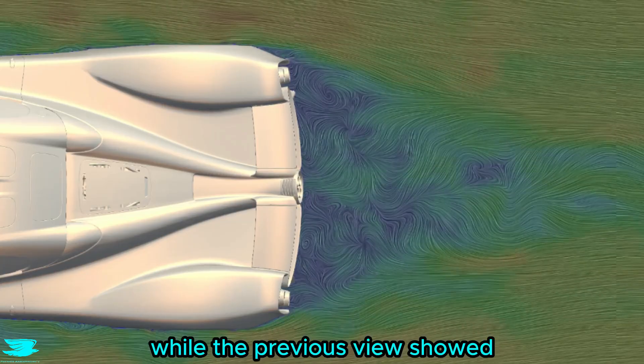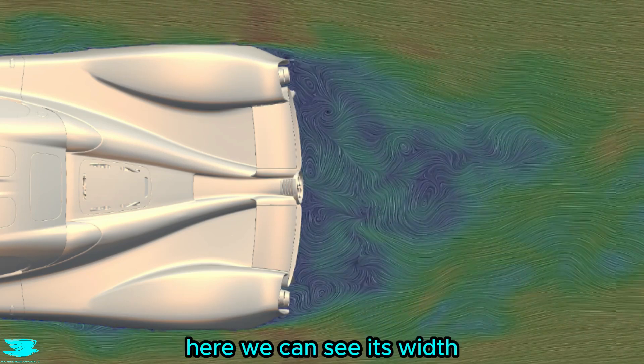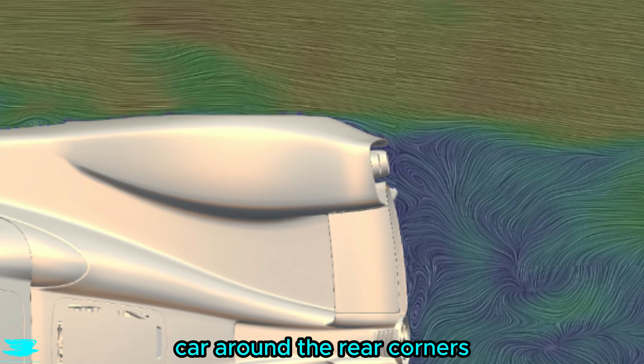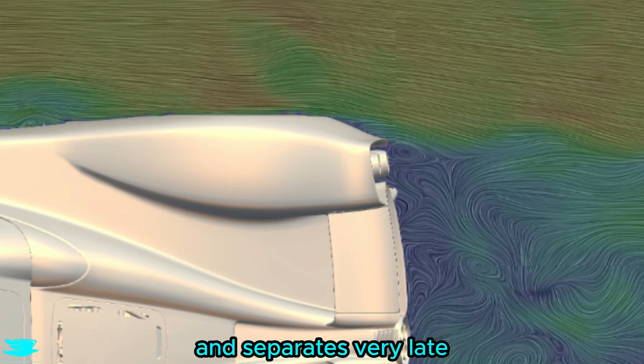And at the rear, while the previous view showed the wake was quite large in the height, here we can see its width gets sucked in quite tightly. That is because the flow hugs the car around the rear corners and separates very late.